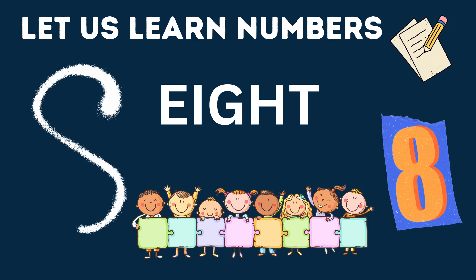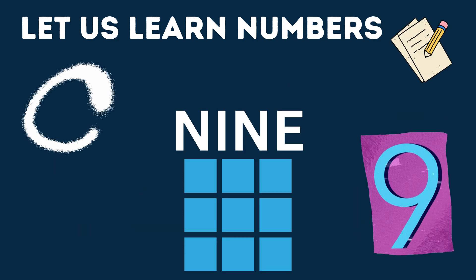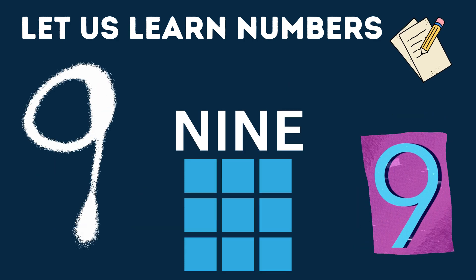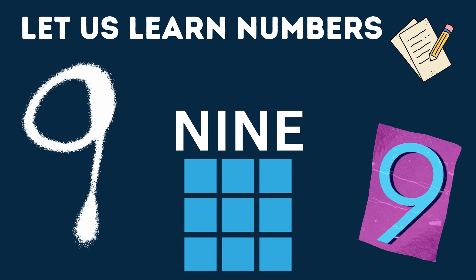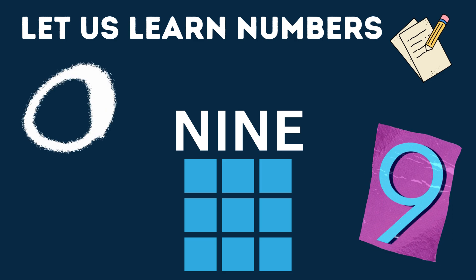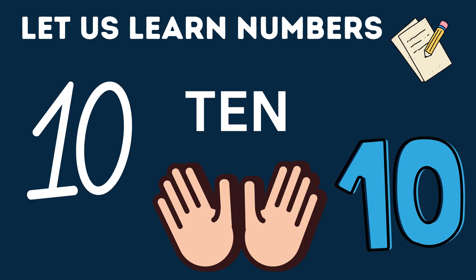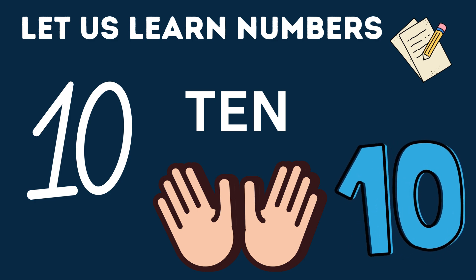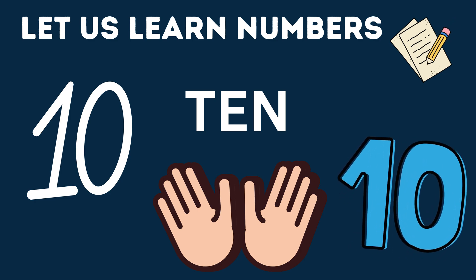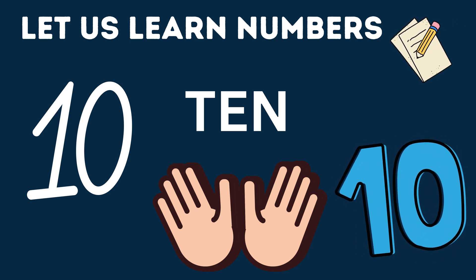OK. 9 — N, I, N, E — 9. How many squares do you see? Nine blue squares. OK. 10 — T, E, N — 10. How many fingers do you see? Ten fingers.